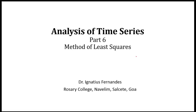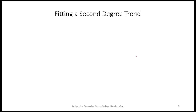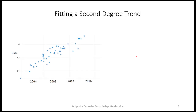Welcome back to module 6 of the unit analysis of time series. We will continue with the method of least squares. Recall that in the previous module we talked about how to fit a line using the method of least squares. In this module we will talk about how to fit a parabolic trend or a curve to a given time series. While we fit a line in the previous module, we assumed the data behaves linearly, so we can fit a line to it, as shown in the graph here.